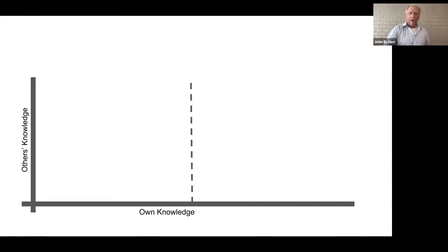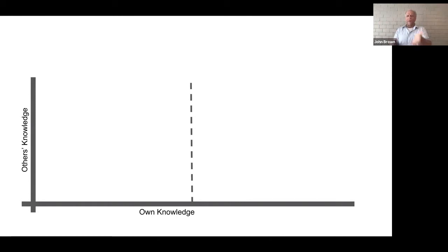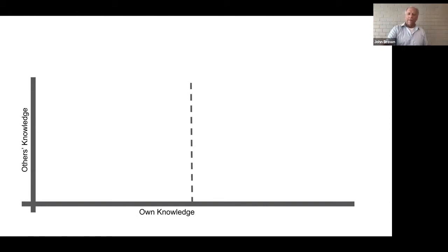If you want to look at something as vague as my own knowledge, it's hard to have a scale. The easiest way to have any kind of a scale of measurement is to make it binary — you either do or don't know. You put a line down the middle and say own knowledge is divided into the things I don't know and the things I do know. Then we could do the same thing with others' knowledge — divided into things they do know and they don't know.